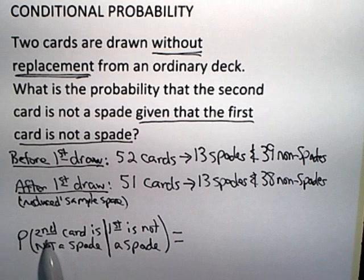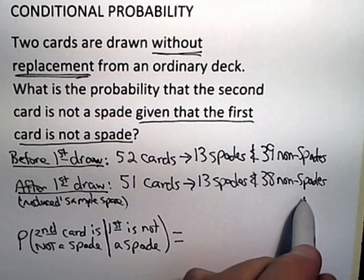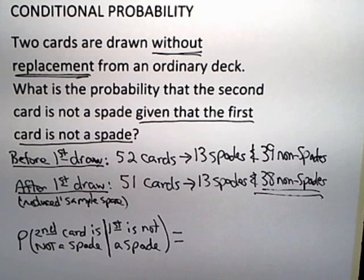So given the reduced sample space, now what is the probability that the second card is not a spade? Well, the non-spades consist of the 38 cards that remain in the deck out of the 51 total cards left in the deck.